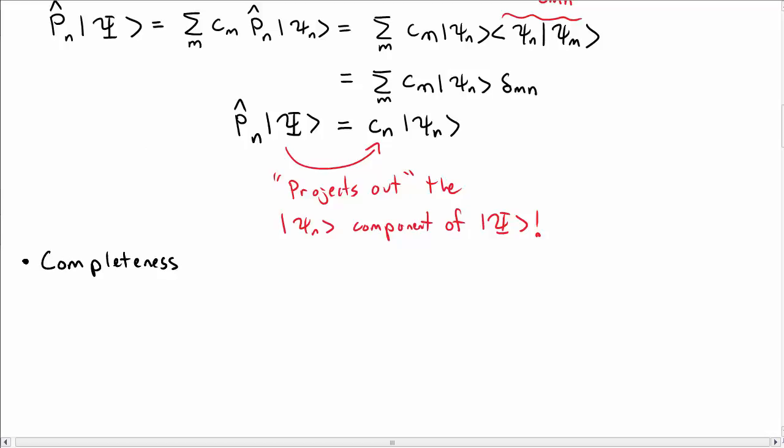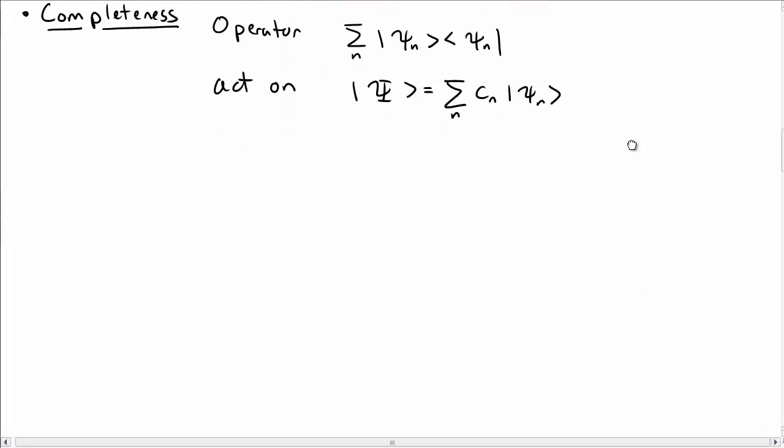A related idea is that of completeness. And so let me construct this following operator, sum over n, then the outer product of psi n, psi n, which is just a projection operator. And let me see what happens when I act this operator on a general state psi again. And so let me write that general state psi as a sum over cn psi n.